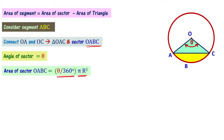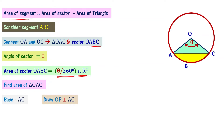Now we need to find the area of triangle OAC. To find the area of triangle OAC, we subtract it from the sector area to get the area of segment ABC. The formula for area of a triangle is half base times height. The base here is AC, and we need to find the height. Let's draw a line perpendicular to AC, called OP.